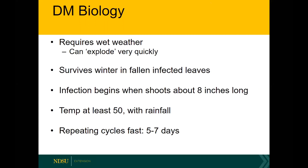Downy mildew survives the winter in infected leaf tissue, and infection will begin when shoots are about eight inches long. You're going to want to apply any protectant fungicides or oomycides shortly before that, when temperatures are around 50 degrees. The pathogen can expand disease quite quickly — it can infect a new part of a plant or a new plant and then produce spores to continue that infection in as little as five days.